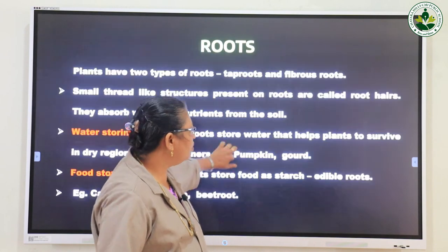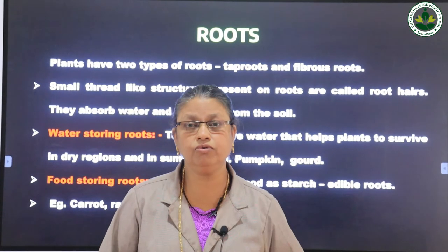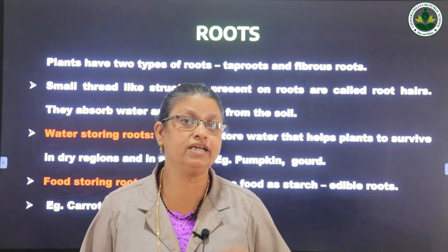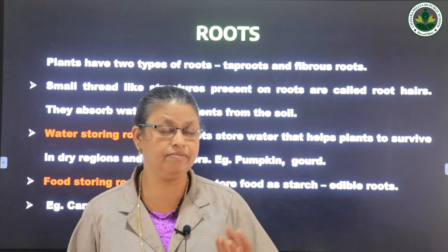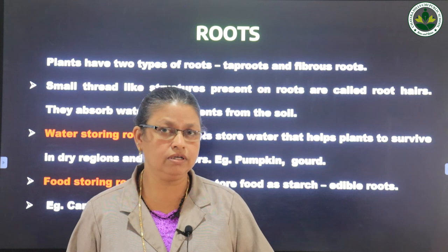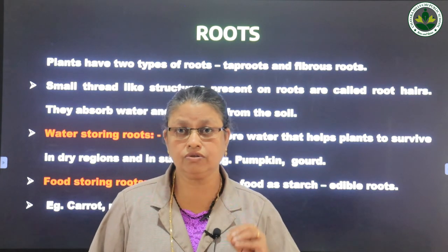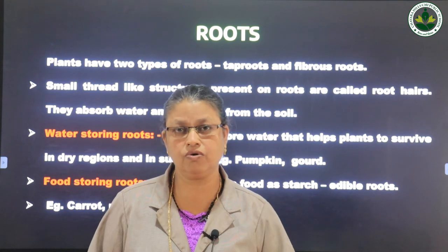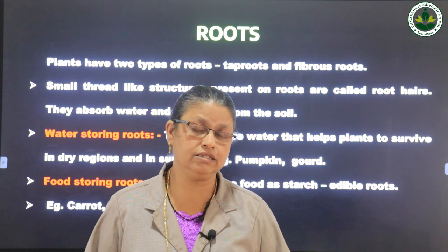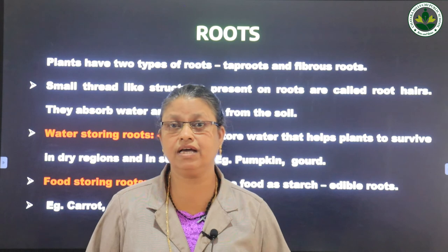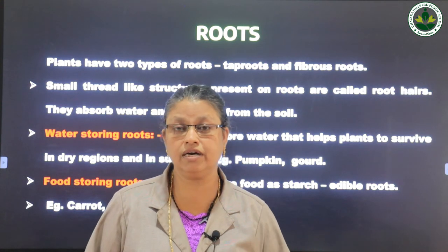Today we will see the different types of roots. The first one is water storing roots. We studied there are two types of root systems: fibrous root system and taproot system. In a taproot system, there is a main root and some roots arise from it. In a fibrous root system, there is no main root — small roots arise from the base of the stem. Water storing roots are taproots, and they absorb water from the soil and store it, so plants can survive in the dry season and summer.